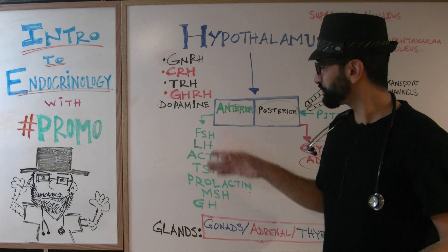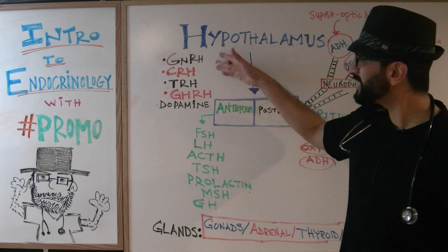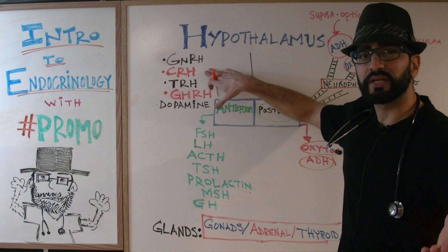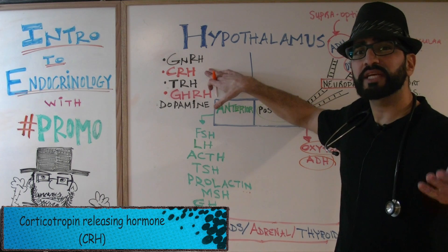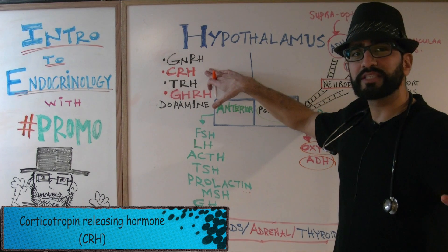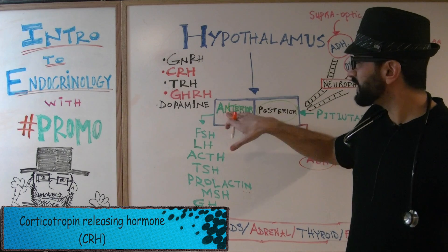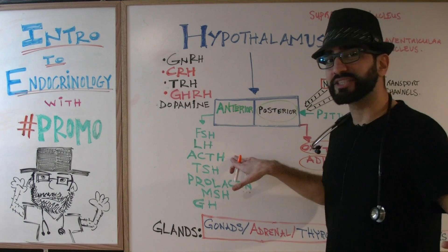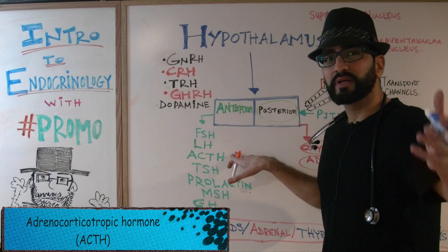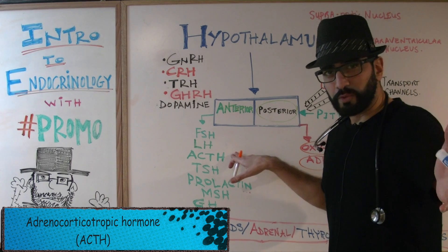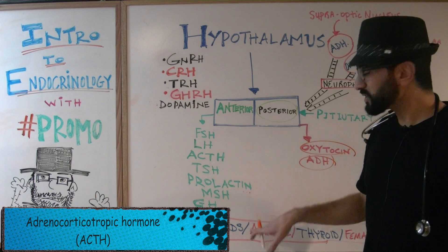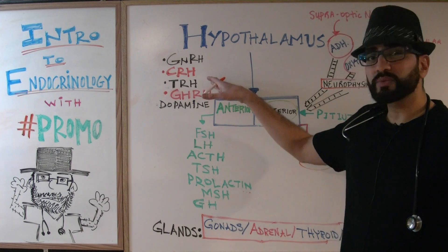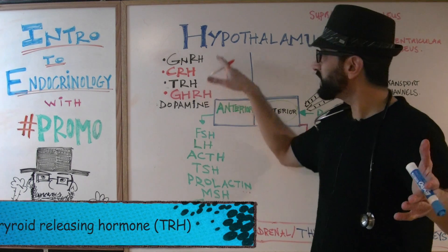The next hormone from the hypothalamus is CRH — corticotropin releasing hormone. CRH works on the anterior pituitary gland, causing it to release ACTH — adrenocorticotropic hormone. ACTH then works on your adrenal glands.